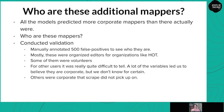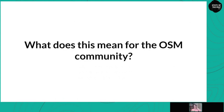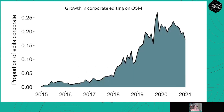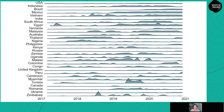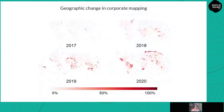Now that we have the model and predicted set of corporate mappers, what does this mean for the OSM community? Looking at growth in corporate editing on OSM from 2015 to 2021, we find a real big spike in 2018 in corporate mappers. By 2020, corporate mappers were responsible for almost 25% of edits by end of 2019. We also produced a geographic plot showing how different countries have different levels of corporate editing, making the geographic change in corporate mapping on OSM even more visible.